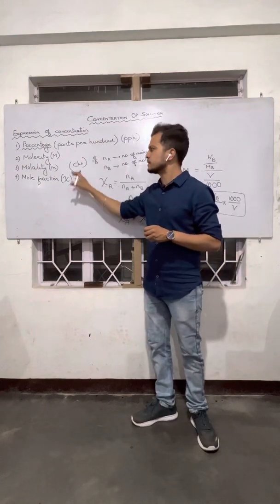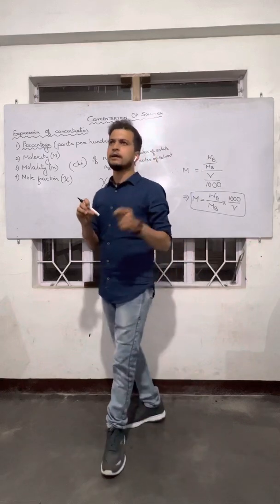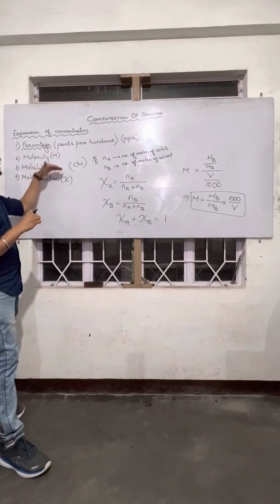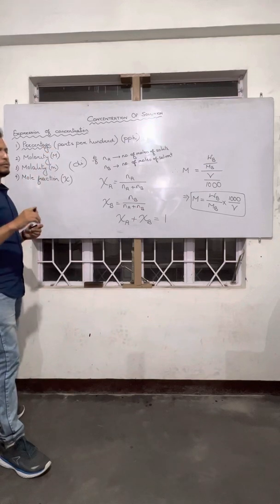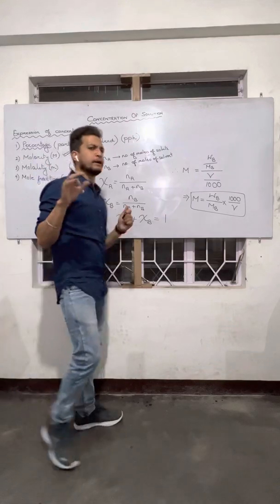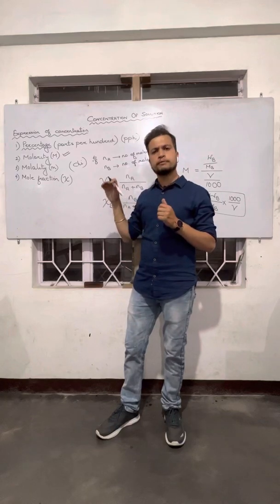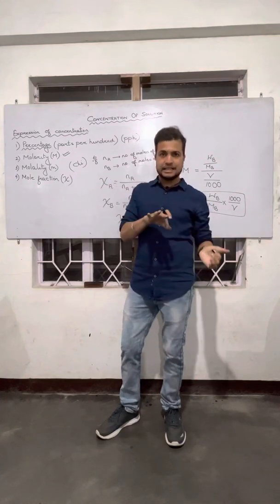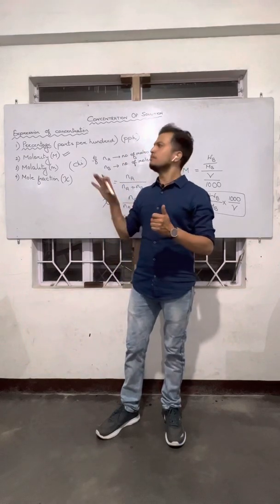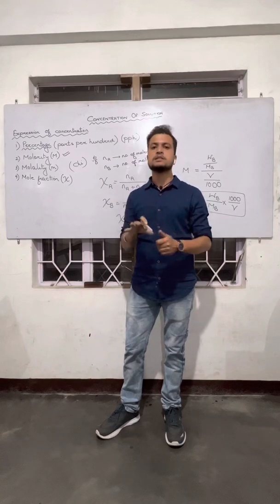Concentration of solution can be expressed in these four ways. An important point: whenever you compare molarity, molality, and mole fraction, molarity is always least preferred. It is always preferred to use molality instead of molarity. Why is molarity not preferred for expressing the concentration of solution?